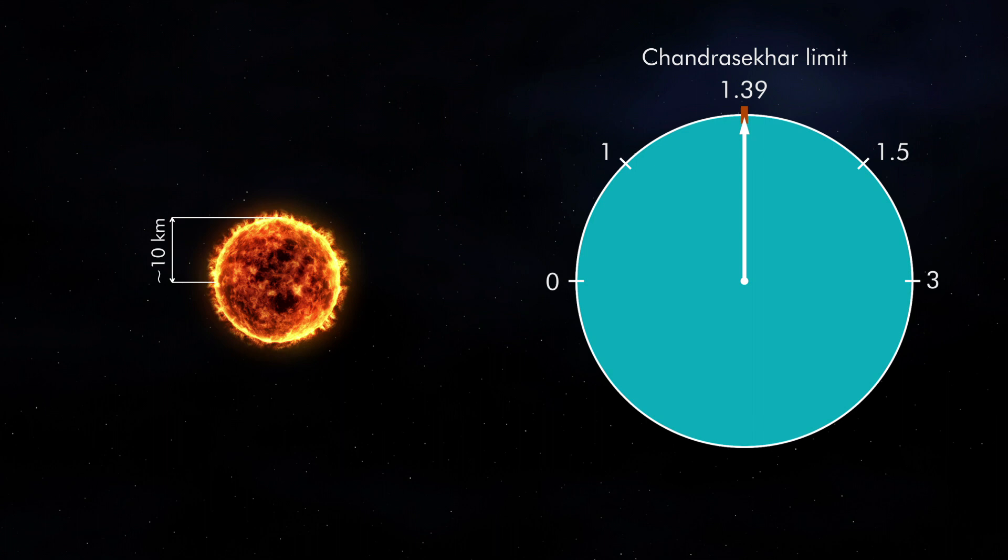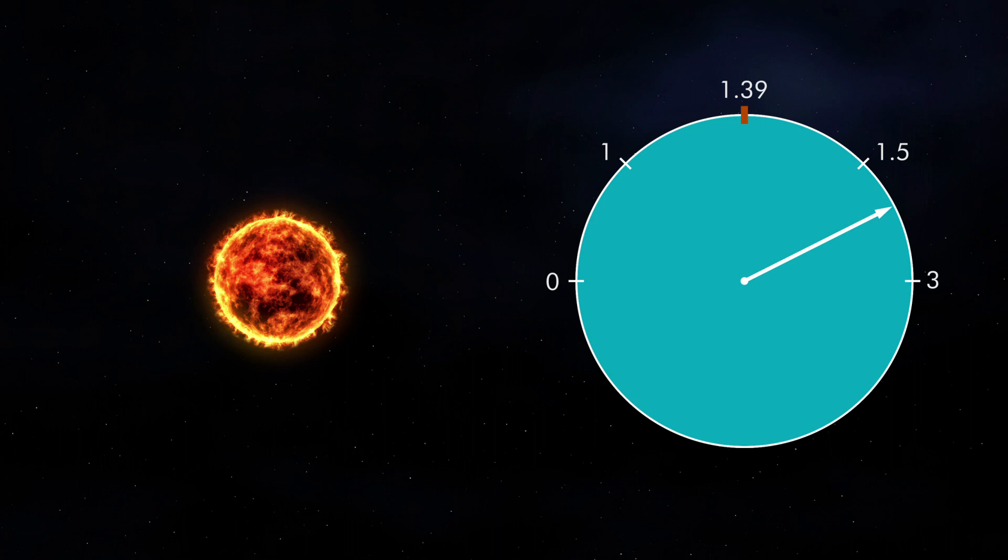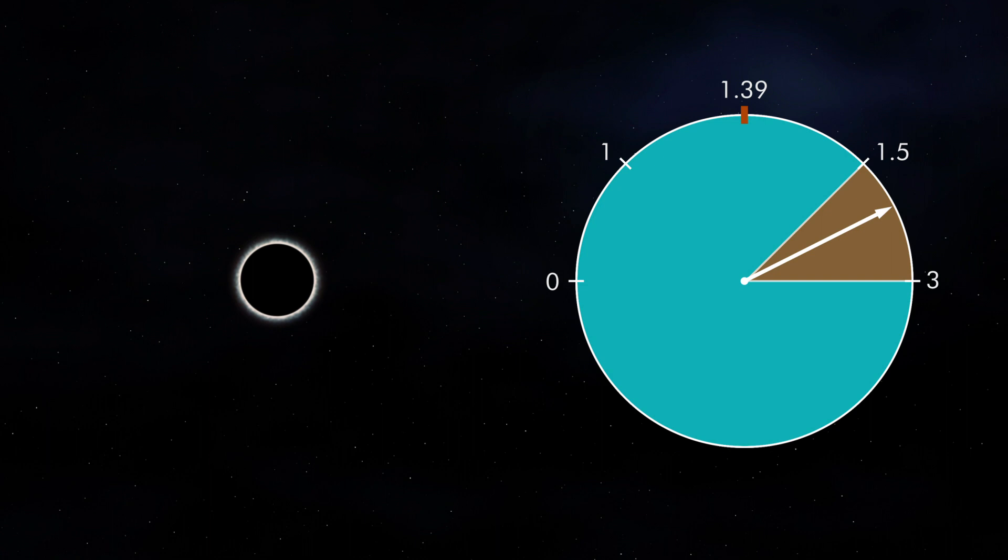If we move the dial further, gravity eventually becomes strong enough to break down the neutrons, and the neutron star collapses into a black hole. This point on the dial is called the Tolman-Oppenheimer-Volkoff limit, and while its exact value is not known, it ranges from 1.5 to 3 solar masses.